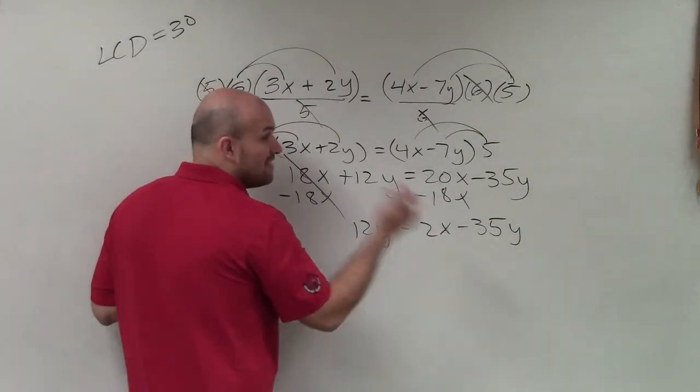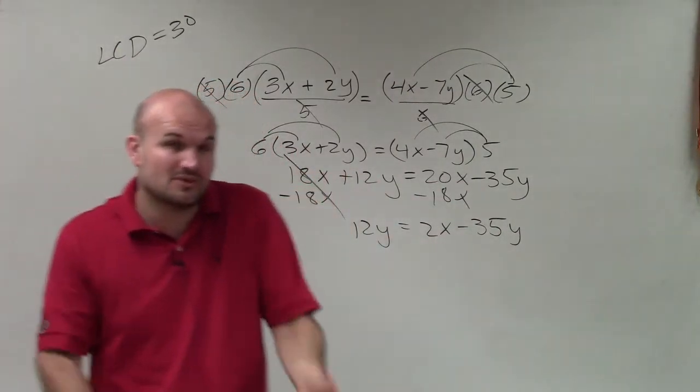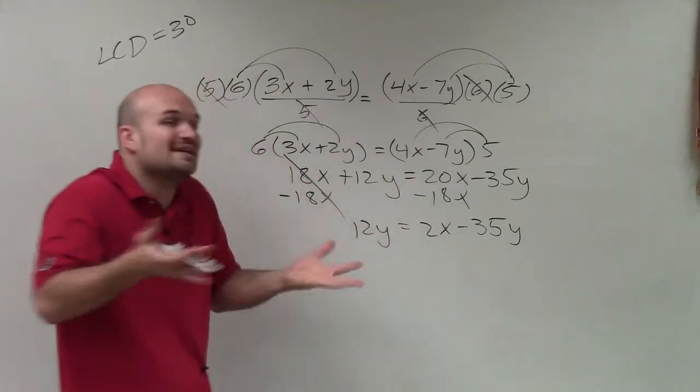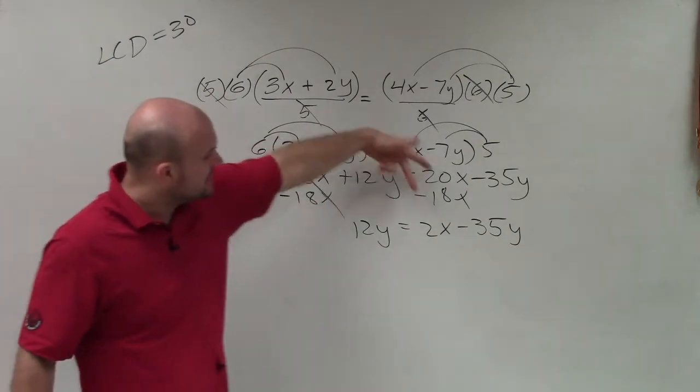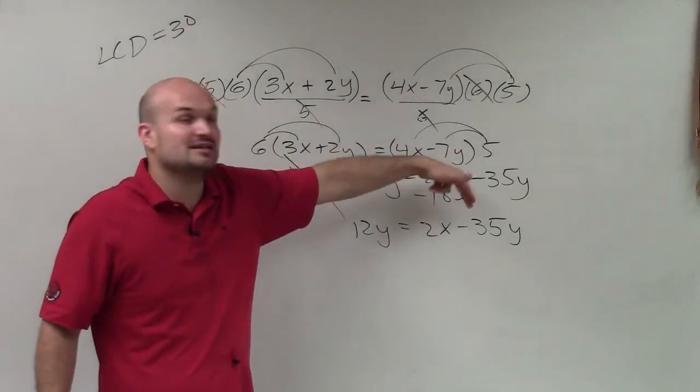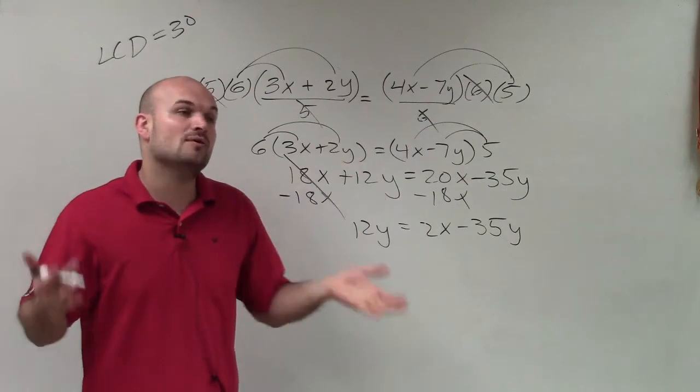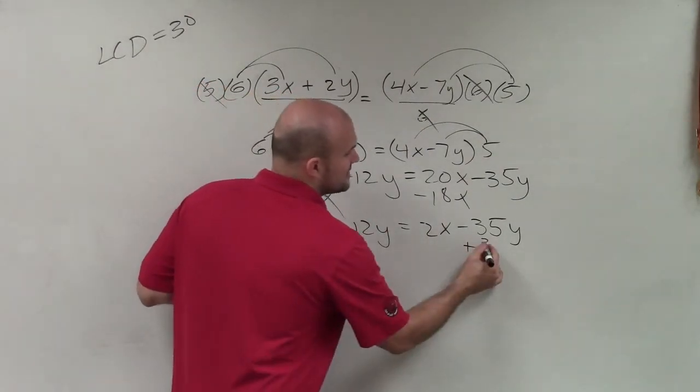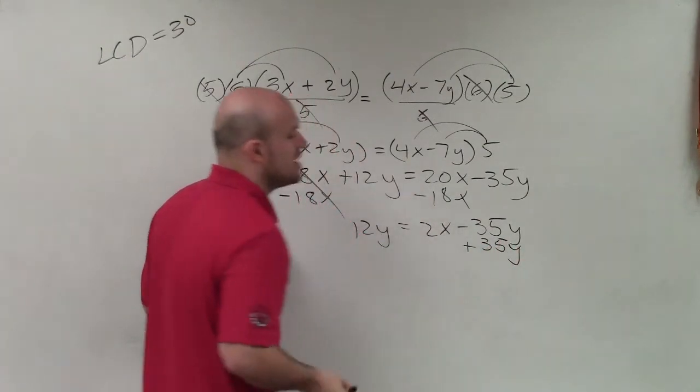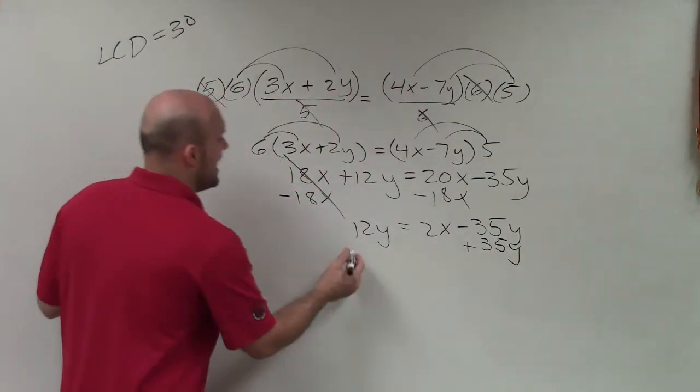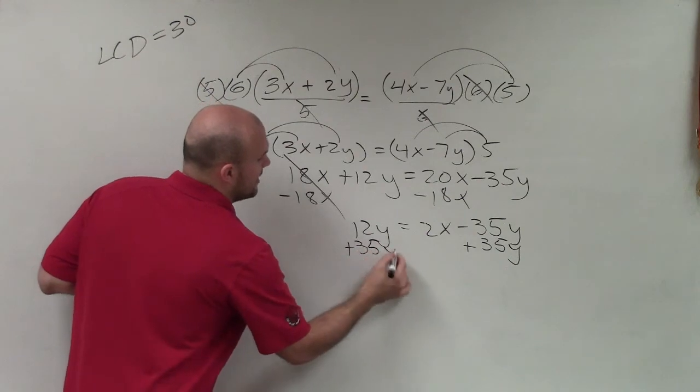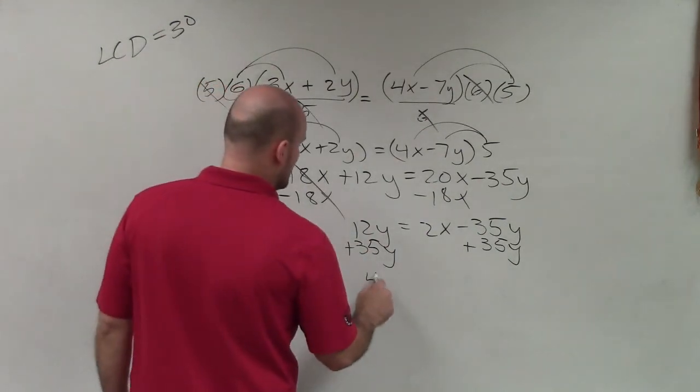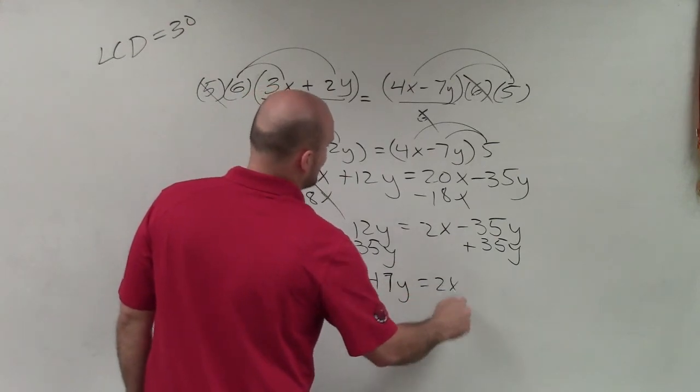Now I only have one variable, so I combined my variables to one side. Now I need to use my inverse operations. I look at my variable and say, what is happening to it? You can see it's being multiplied by 2 and then being subtracted by 35y. We always use our inverse operations. The first thing I'm going to undo, in reverse order of operations, is the subtraction of 35y by adding 35y. These two are like terms, so I can combine them. That's going to give me 47y equals 2x.